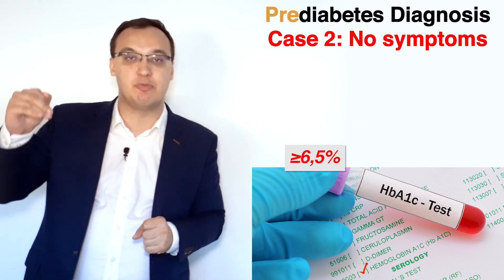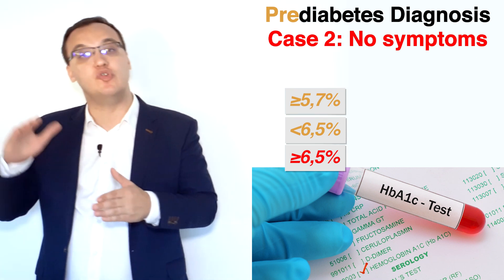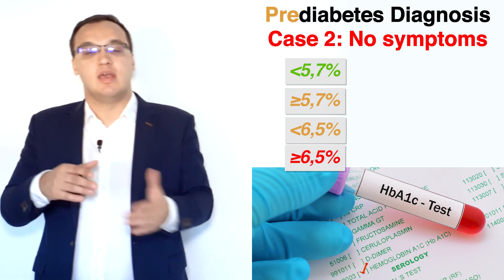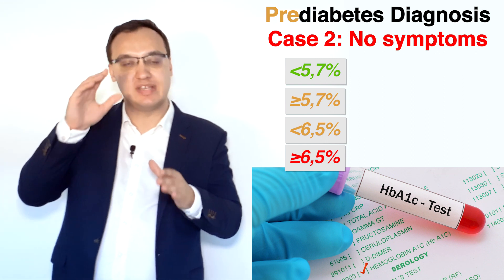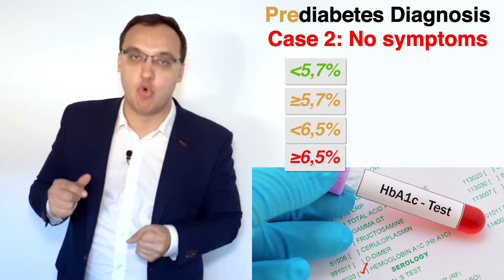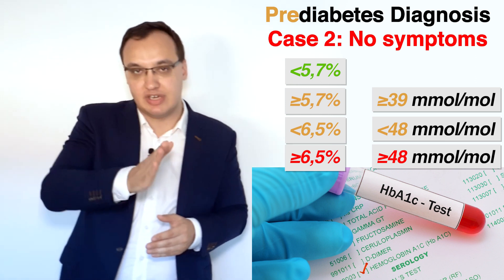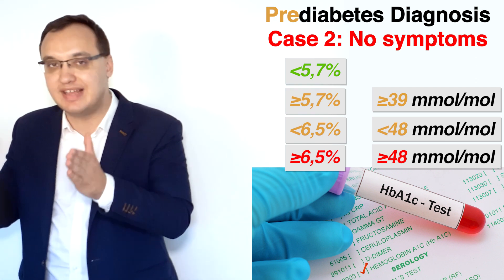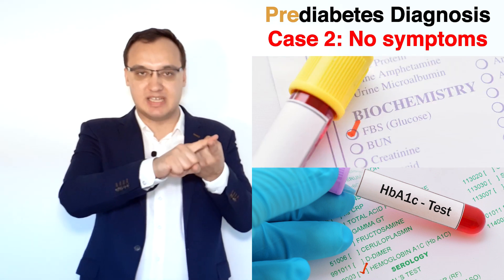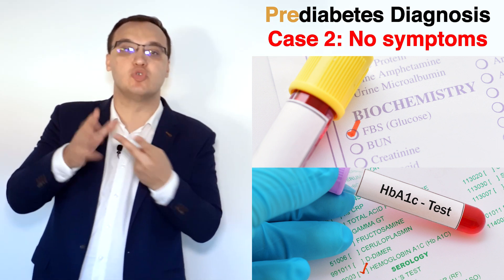For hemoglobin A1c: more than 6.5% is diabetes, 5.7% to 6.5% is pre-diabetes, and below 5.7% is normal. In millimoles per mole, more than 48 mmol/mol is diabetes, 39 to 48 mmol/mol is pre-diabetes, and below 39 mmol/mol is normal. We need fasting plasma glucose together with HbA1c for a diagnosis, because together they are almost as sensitive as OGTT.